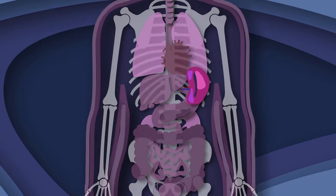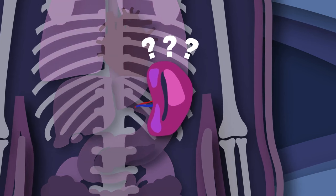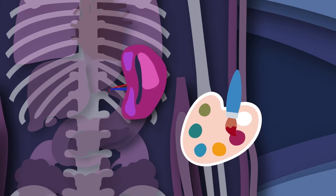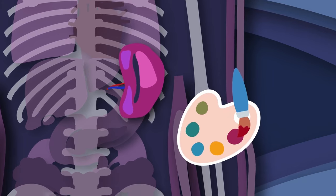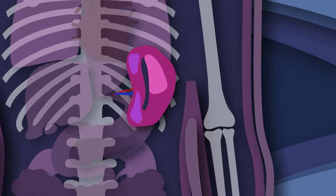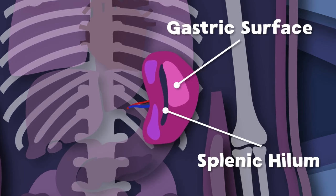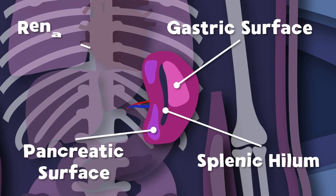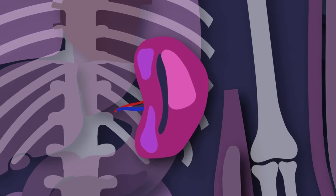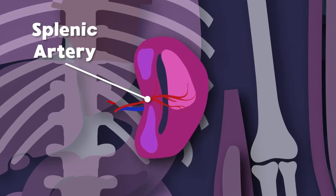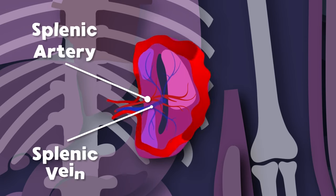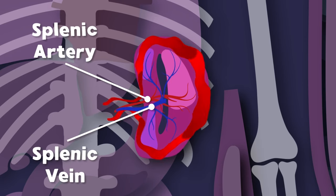What's the anatomy of the spleen? I will teach you this now while you look at the splenic work of art. Here you see the splenic hilum and the gastric surface. There's the pancreatic and renal surface. The splenic artery supplies oxygenated blood to the spleen, and the splenic vein drains the blood from the spleen.